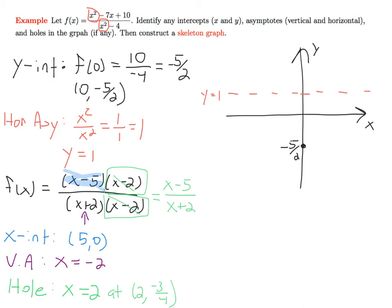Coming over to mark these properties on our skeleton graph: the x-intercept at (5, 0) goes here, the vertical asymptote gives us a vertical dashed line at x equals minus 2, and the hole at (2, minus 3 fourths) is marked in green. This is what we mean by a skeleton graph — we have the bones of the graph. In the next example, we'll talk about how to create a sign chart to fill in the skeleton graph and get a more complete picture of this function.